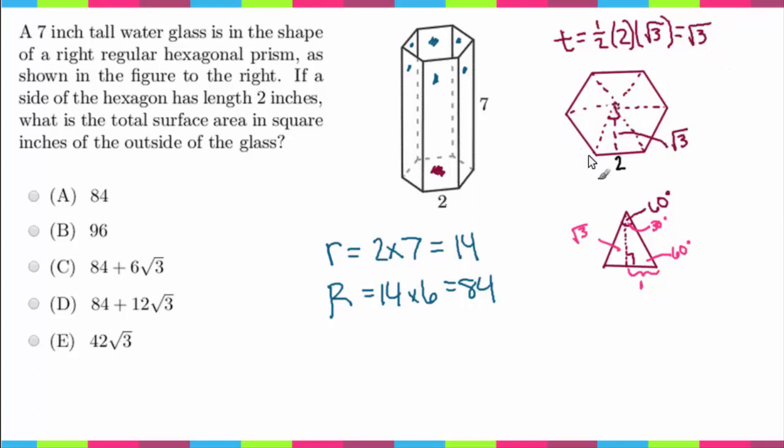Now if we wanted to calculate the area of this entire hexagon, we're going to multiply by 6. So our big T is going to equal rad 3 times 6, which is just 6 rad 3.